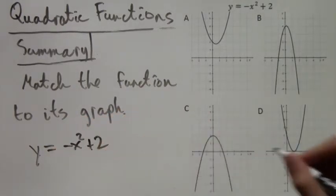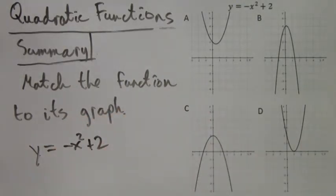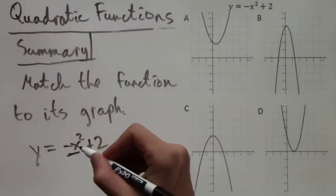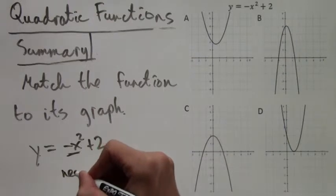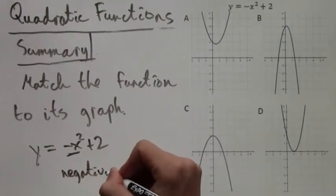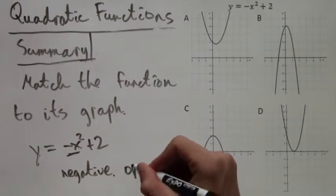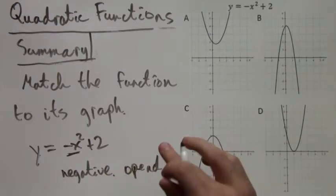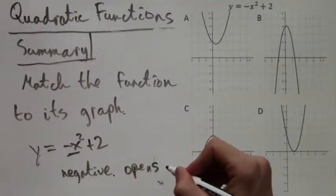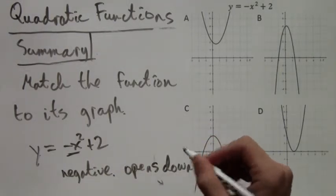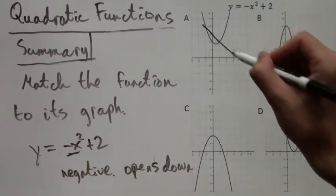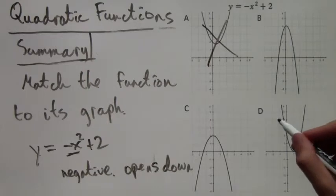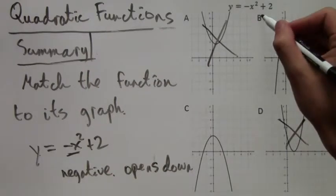So again we're going to start with does the graph of this function open up or does it open down? Now the x squared term has a negative coefficient. So that means that this parabola, whichever one is the correct answer, must open down. That eliminates A and D as possible answers. We are left with only B and C.